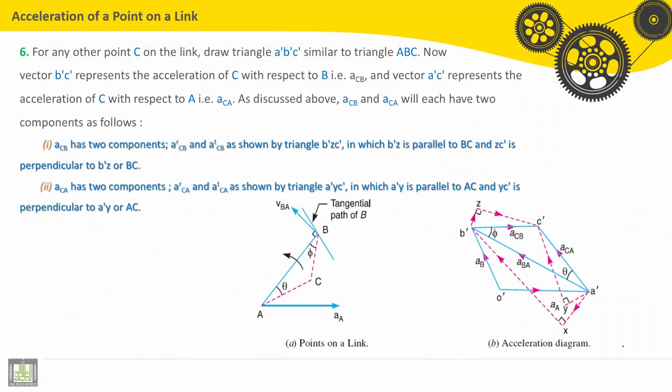We will continue here for acceleration at a point on a link and the acceleration diagram drawing. Step number six: for any other points C on the link, C is another point on the link.